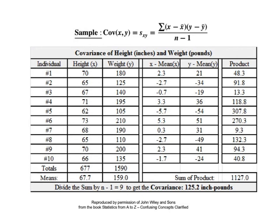Next, we multiply each pair of numbers in columns 4 and 5 to get their product, which is the sixth and last column. To the right and below the 10 rows of calculations, we total up the sum of the 10 products and we get 1,127. Finally, in the bottom row, we divide that sum by n minus 1 equals 9 and we get our answer. The covariance is 125.2 inch-pounds.